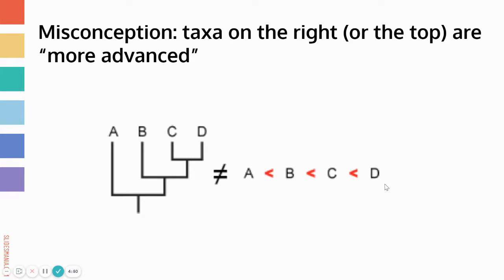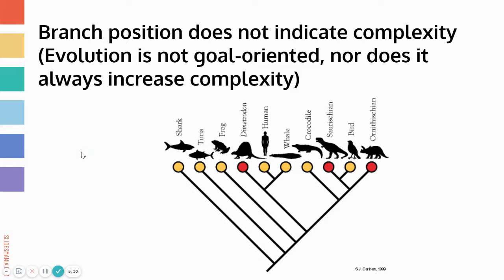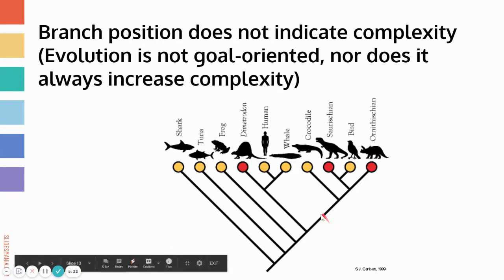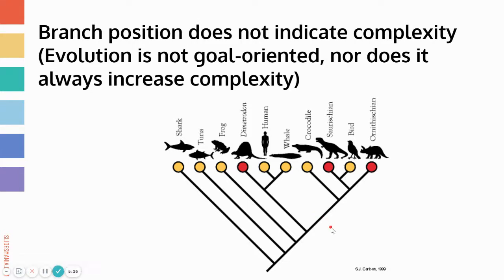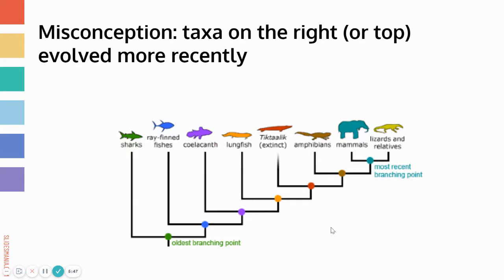Another misconception is that taxa or species on the right or top of a tree are more advanced than those on the left or bottom — that species D is somehow better or more complicated than species A. That's not the case. Branch position doesn't imply complexity; evolution doesn't always increase complexity. A trait can evolve on a branch, but we can also see the removal of a trait — for example, the loss of limbs on the branch giving rise to snakes. Evolution is just a change in allele frequency over time.